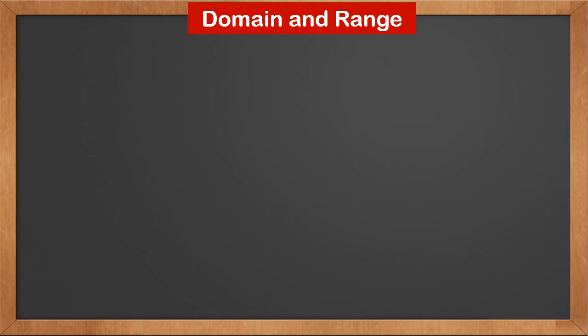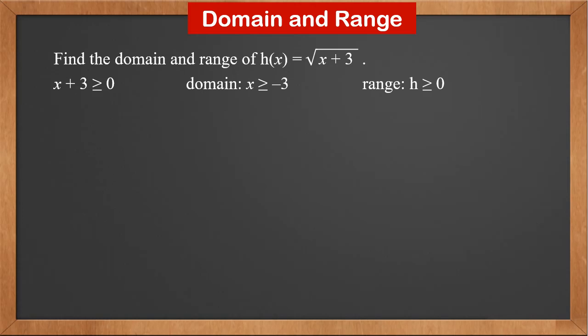We need to be able to find the domain and range of a function. Find the domain and range of h(x) equals square root of x plus 3. We know the inside of a square root can't be negative. So x plus 3 is greater than or equal to 0. Therefore, the domain is x greater than or equal to minus 3. The range is h greater than or equal to 0.